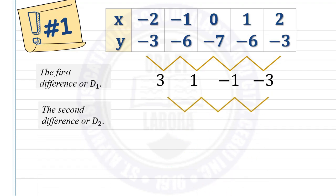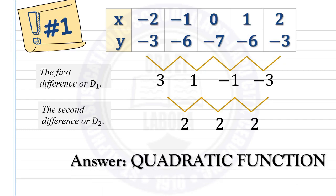Proceed to the second difference. Subtract 3 with 1, then subtract 1 with negative 1, and subtract negative 1 with negative 3. 3 minus 1 is 2, 1 minus negative 1 is also 2, and negative 1 minus negative 3 is 2. As you can see, the second difference is the same or constant. Therefore, we could say that the given table of values is a quadratic function.